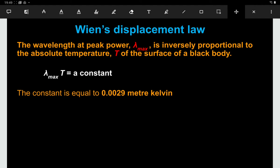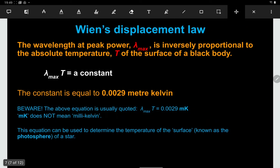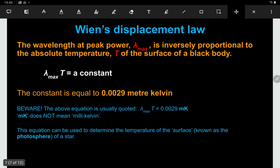Now that constant there, the constant of proportionality, is equal to 0.0029 meter kelvins. Be really careful with that one because it's often written lowercase m capital K, which looks a little bit like millikelvin. But it's not millikelvin, it's meter kelvin. And what that tells you is, at a given temperature, what would the wavelength be?